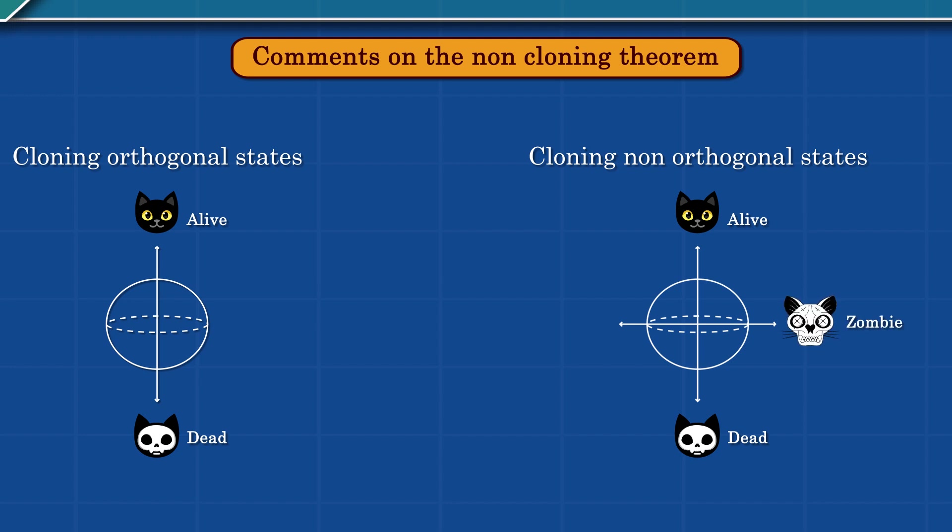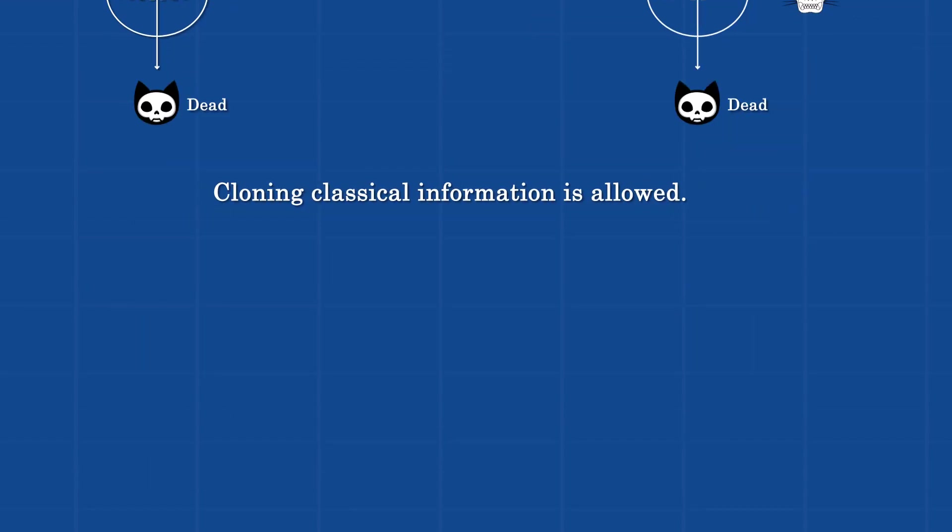This is because the superposition of two zombie cats can be alive, just like a superposition of dead and alive cats is a zombie cat. So, this logic goes both ways. This also answers why we can copy digital information on our computers. Zero and one are orthogonal states, and we are perfectly allowed to clone them.